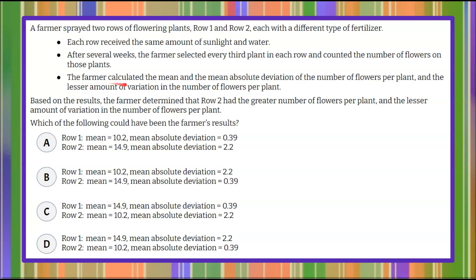The farmer calculated the mean and the mean absolute deviation of the number of flowers per plant. Based on the results, the farmer determined that row two had the greater number of flowers per plant and the lesser amount of variation in the number of flowers per plant.